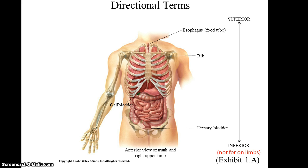Another set of directional terms is superior and inferior. These terms are for all body parts that are not in one of the limbs, or when you're comparing a part of a limb to some other part of the body. Superior is toward the head, and inferior is toward the tail. For instance, in this picture we see that the gallbladder is inferior to the esophagus, while the esophagus is superior to the urinary bladder.